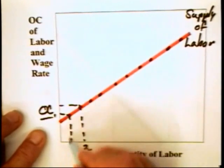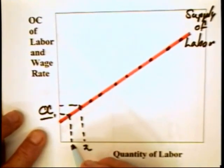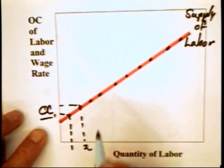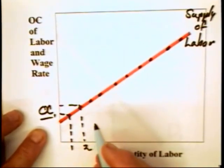The first unit of labor offered is going to be offered, and the worker is going to give up the least valuable activity that he or she has as an alternative. That means if the worker wants to offer more work on the market, it's going to have to give up something that is even more valuable.